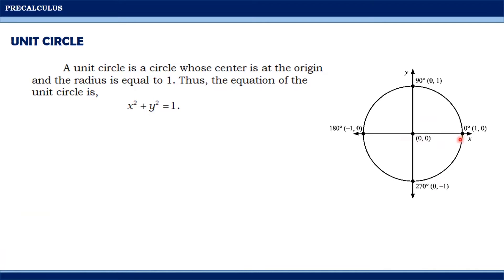Hence, this point here has coordinates (1, 0). This point here has coordinates (0, 1), while this one is (-1, 0). And this point is (0, -1).